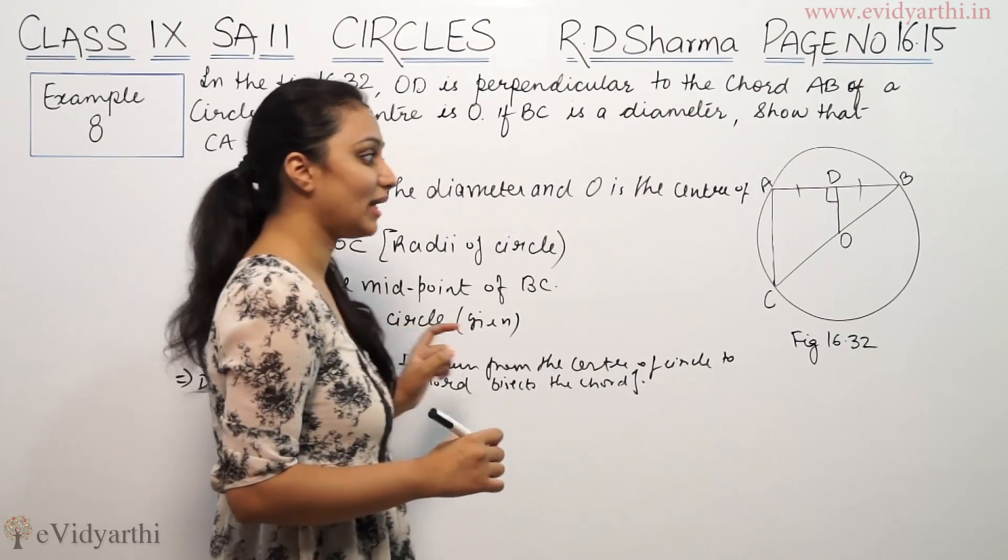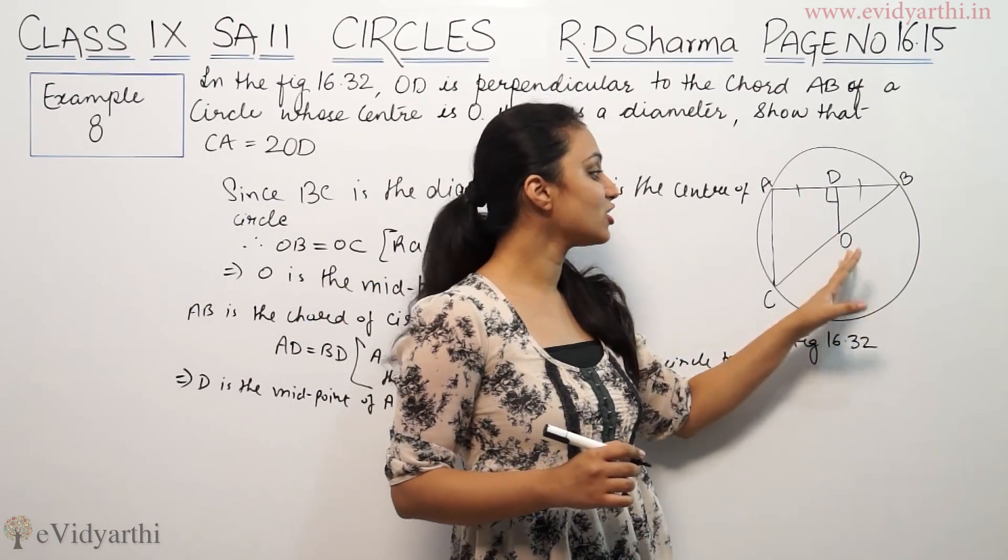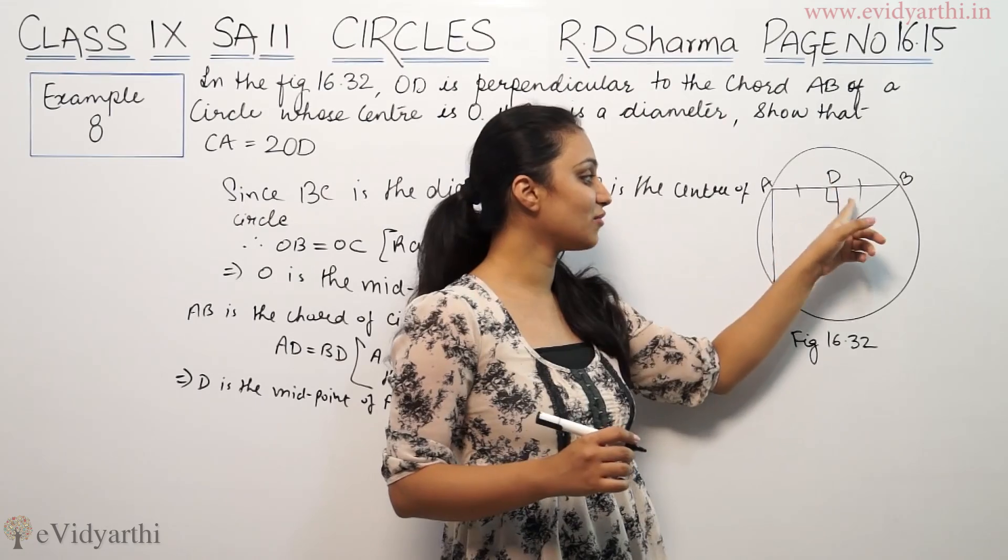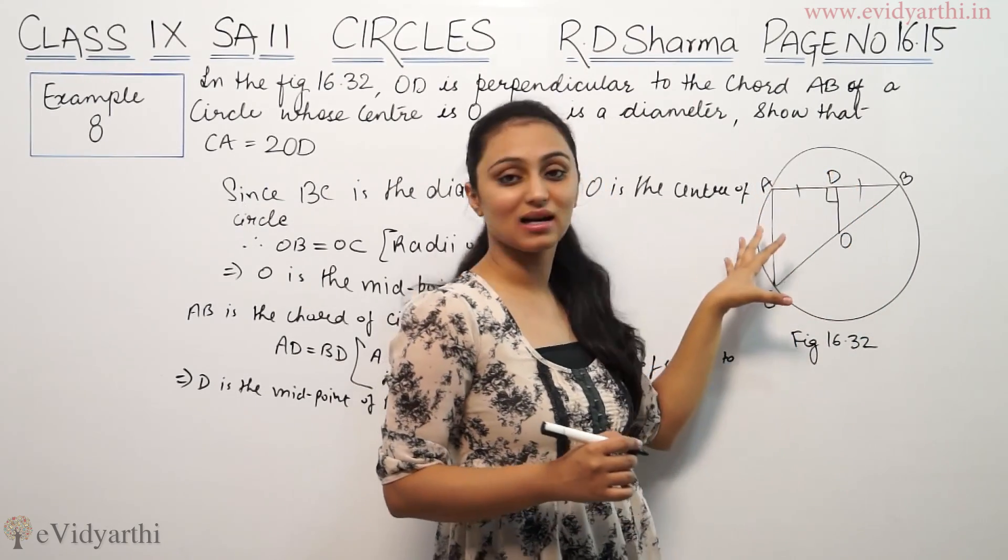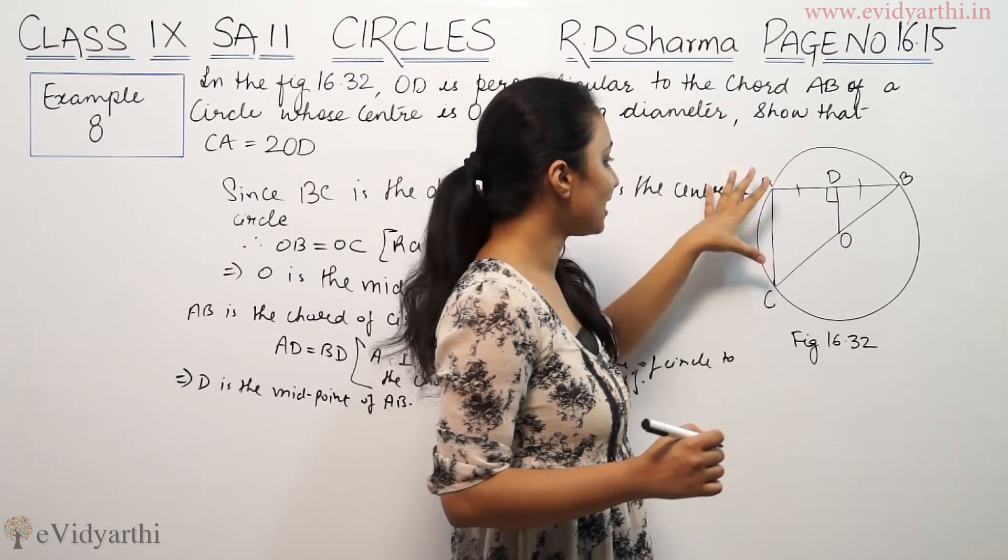So D is the midpoint of AB and O is the midpoint of BC. So O and D are the midpoints of BC and AB respectively, and OD is parallel to AC.